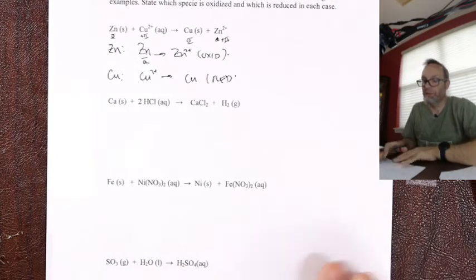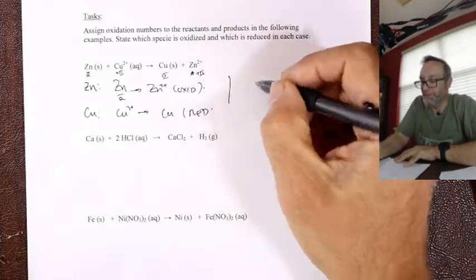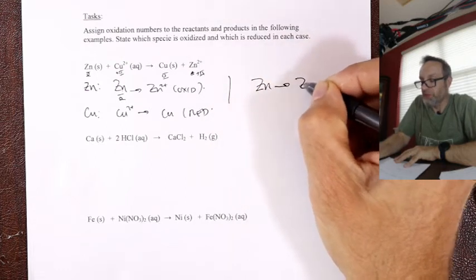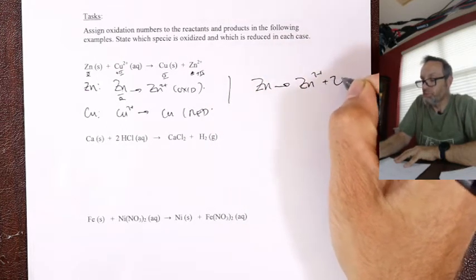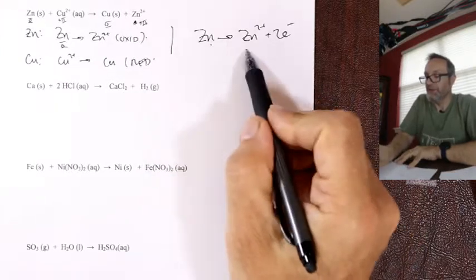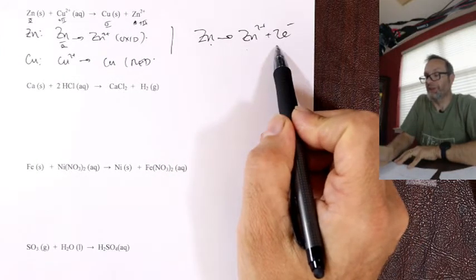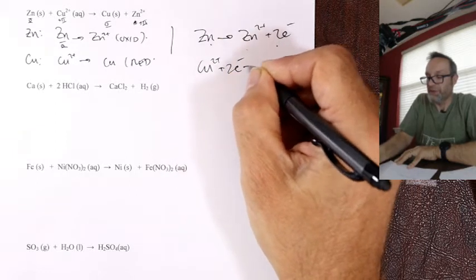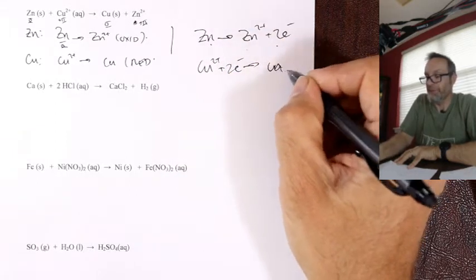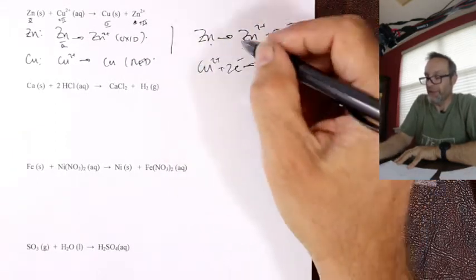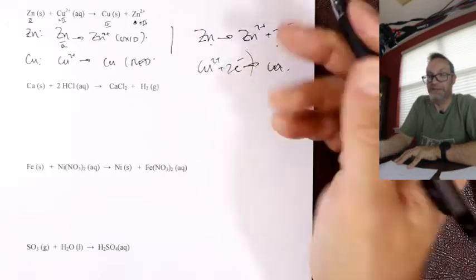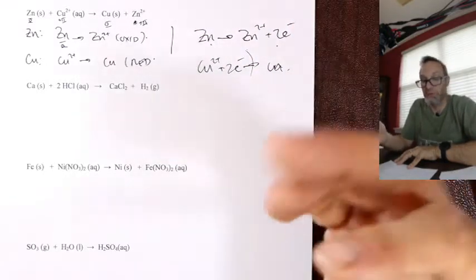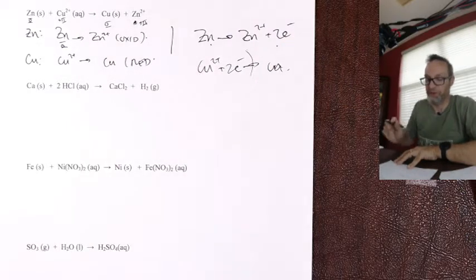For a heads-up on later work, you can write these as traditional half-equations. Zinc lost two electrons: Zn → Zn²⁺ + 2e⁻. Copper gained two electrons: Cu²⁺ + 2e⁻ → Cu. If you add those together, the electrons cancel — when electrons cancel, it means it's done correctly.